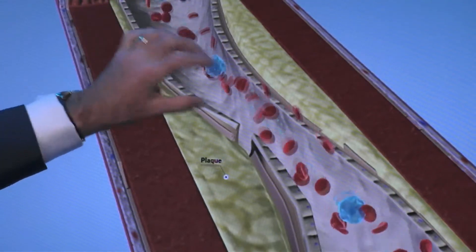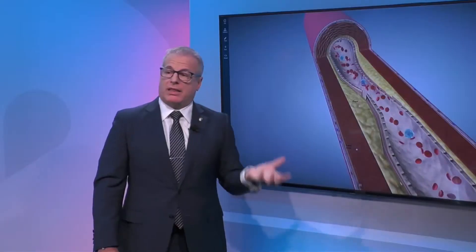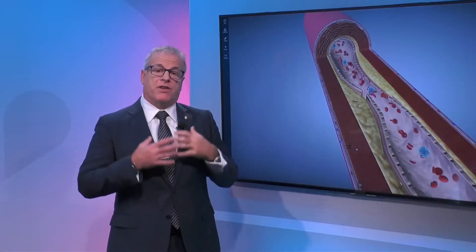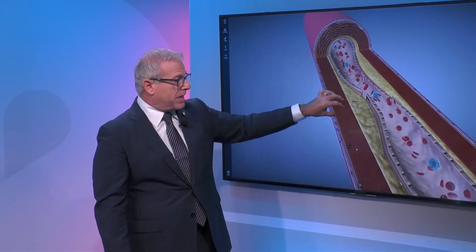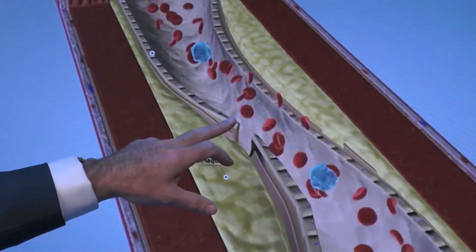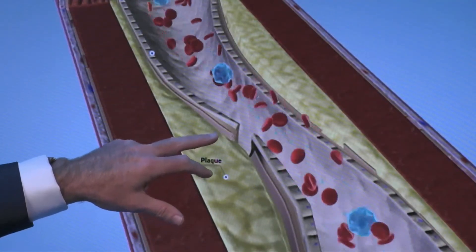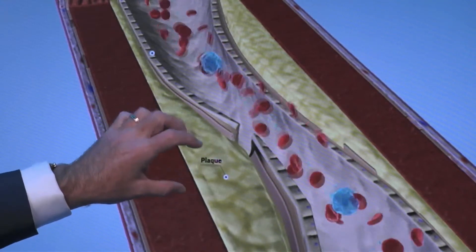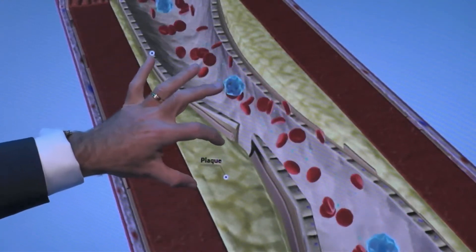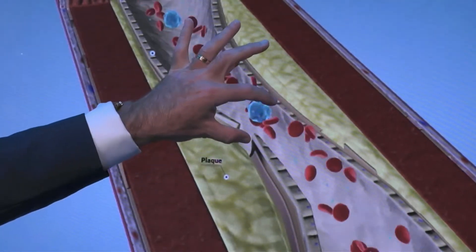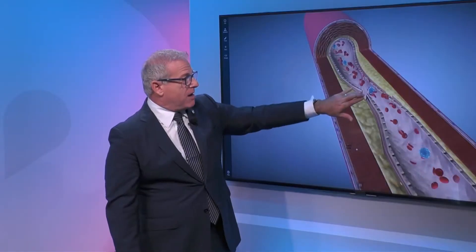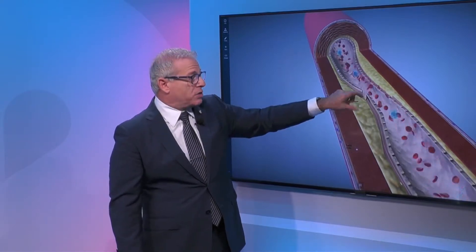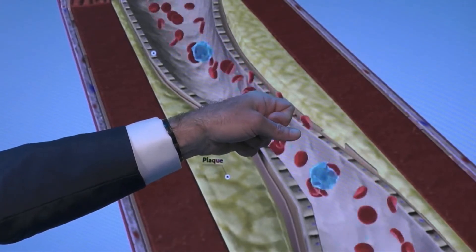Triglyceride levels are markers of an inflammatory process in our body which translates to the arteries. The concern is when the plaque builds up it can narrow an artery, and when this wall rips — which is what we're seeing here — all this plaque gets exposed to the bloodstream and causes blood clots. This is a normal artery; this is a narrowed artery. Someone might get chest discomfort when exerting themselves, but when this rips, a blood clot forms, you have a blocked artery and a heart attack.